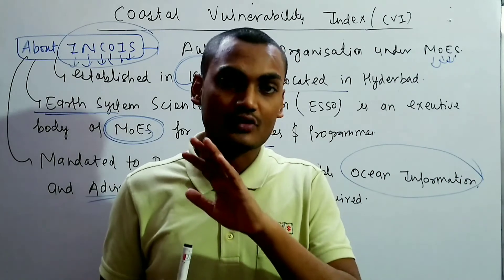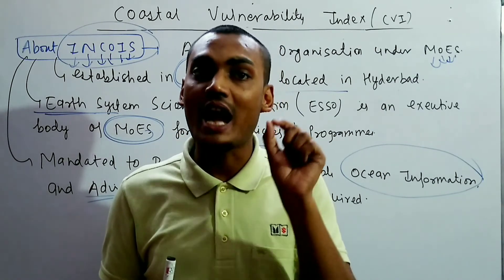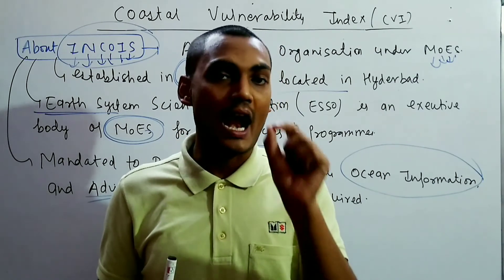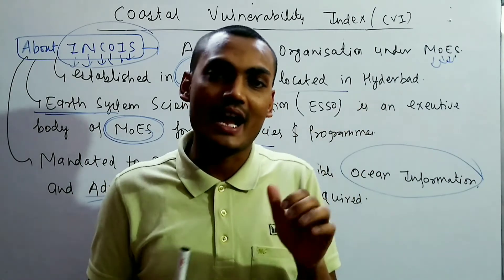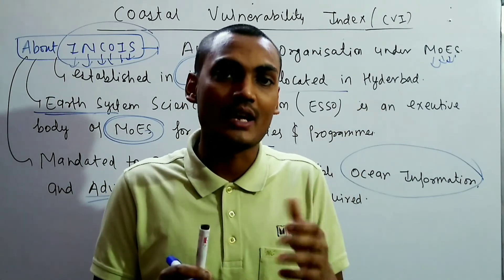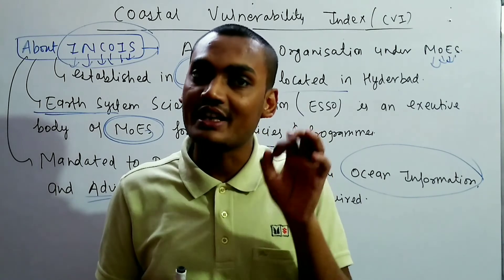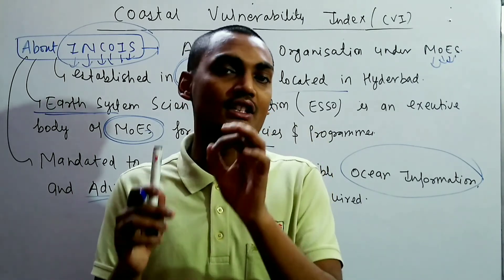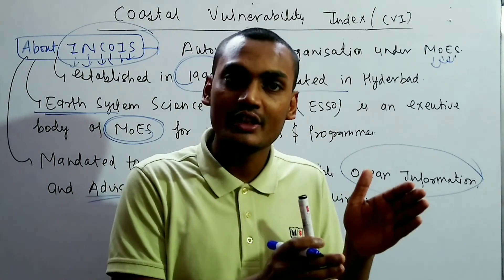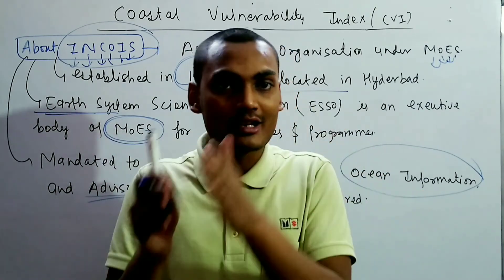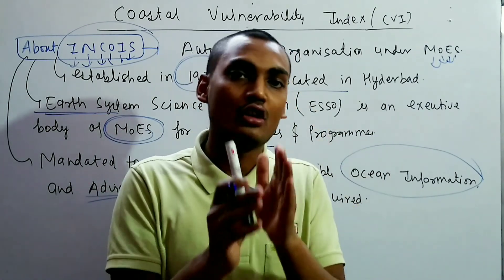There are around nine states and four union territories along the Indian coastline. Gujarat has the largest coastline among states, and Andaman and Nicobar is the largest among union territories. When comparing both, Gujarat has the highest coastline overall.